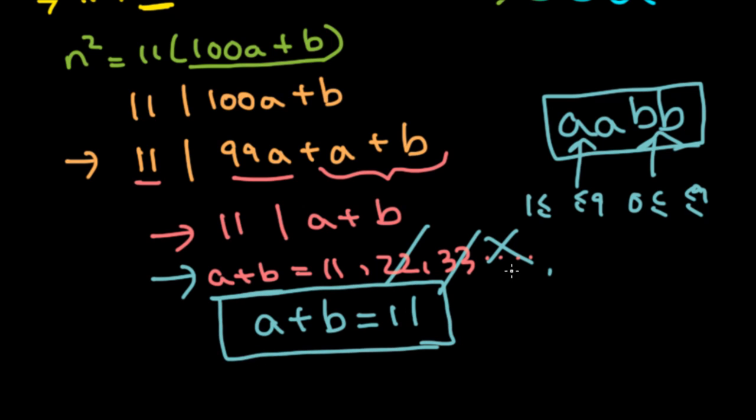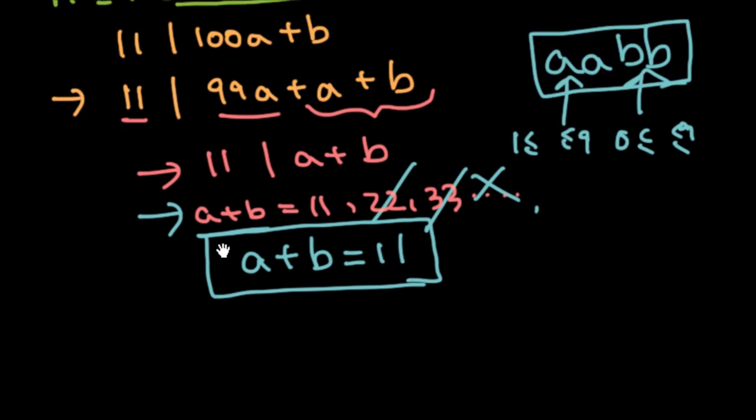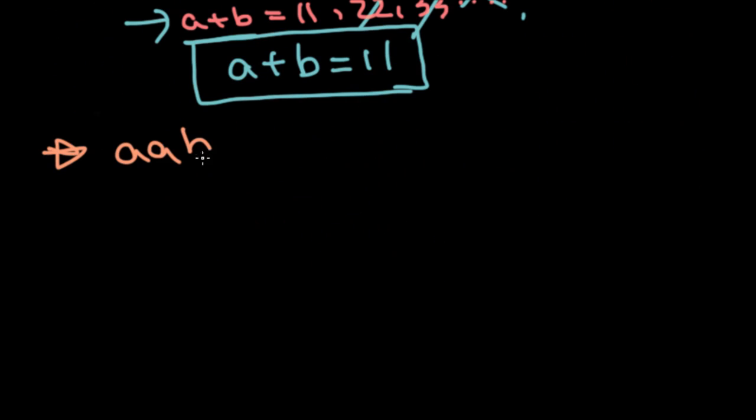So let's consider the different cases for this. Remember that AABB is a perfect square. So since it's a perfect square, the last digit, which is B, will have some restrictions. Let's try to look for those restrictions,